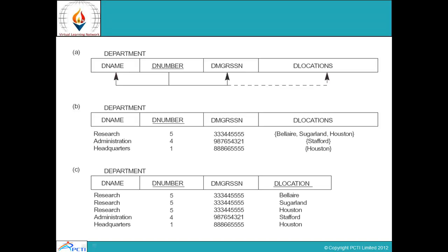There is a diagram of a department table with four columns: department name, department number, department manager SSN, and department location. If you know the D number, you can extract the name and D manager SSN, and from that you can also find D location. When we enter data into the table, you can see that for the 'Research' department, the department number is 5 and the DMR SSN is given, but there are many locations. Other cells have only a single value, but this one cell contains three values, which creates a problem.